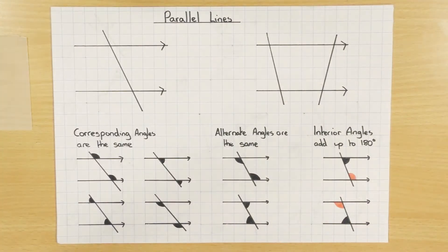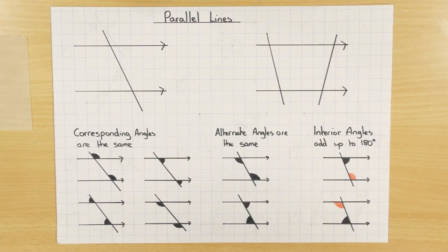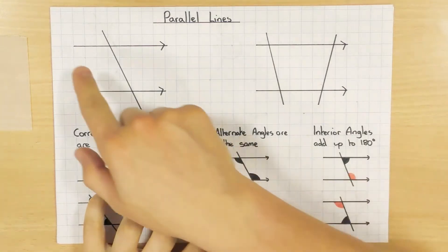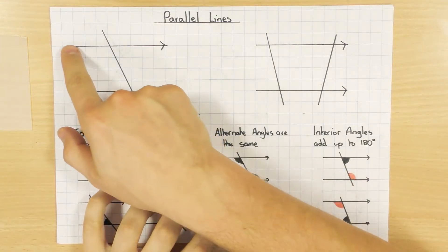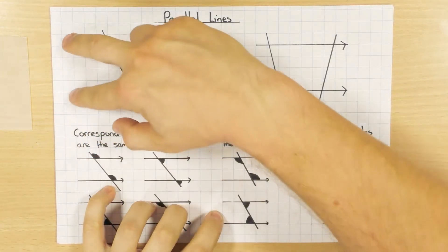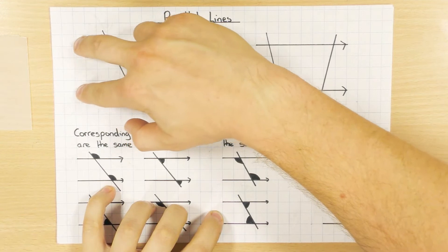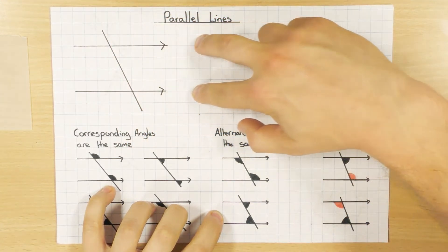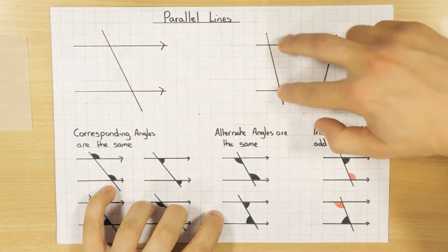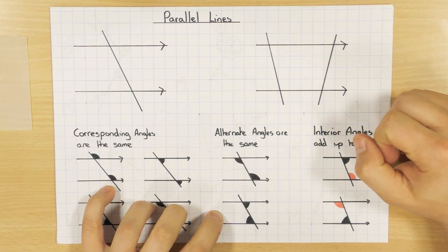In this video we're going to have a look at parallel lines. Hopefully you know that parallel lines are two lines that will never meet. Here's an example — these two lines, if they're continued forever and ever, are never going to meet, and we call them parallel lines.